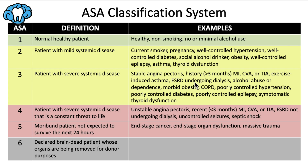ASA 3 also includes end-stage renal disease where the patient is currently undergoing dialysis, alcohol abuse or dependence, morbid obesity, COPD, poorly controlled hypertension, poorly controlled diabetes (HbA1c greater than 7%), poorly controlled epilepsy, and symptomatic thyroid dysfunction. If the last category was about well-controlled diseases, this one is about poorly controlled diseases. For these patients, elective care is generally okay, but there needs to be a serious consideration of treatment modification.